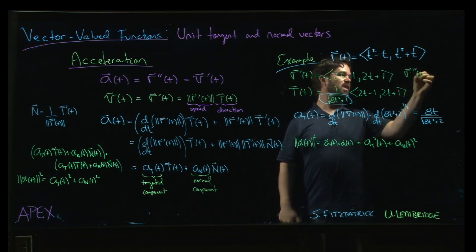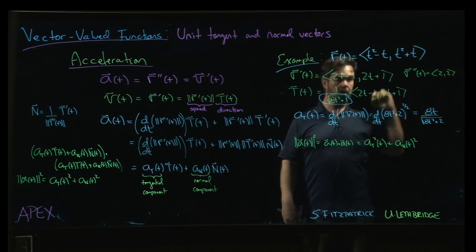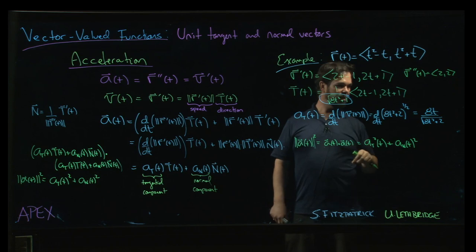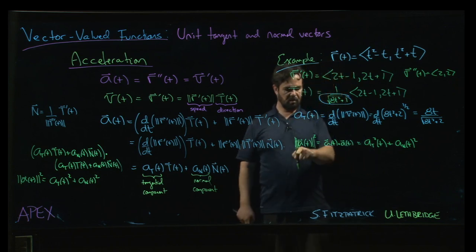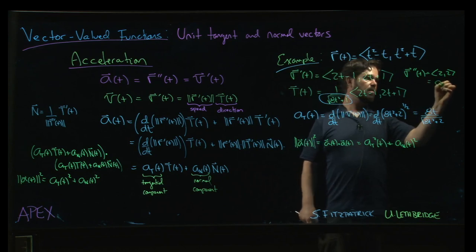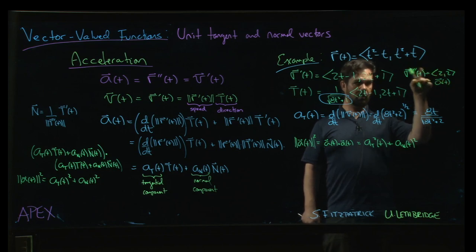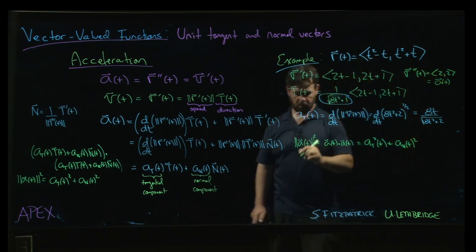r''(t) is just (2, 2), yeah, okay? So, so now what we can do is, so then the magnitude of, and that's the acceleration. So we get, the magnitude is going to be 2² plus 2², we get eight under the square root, but square it.